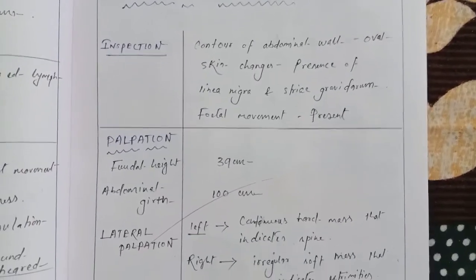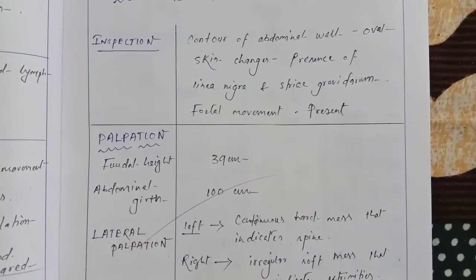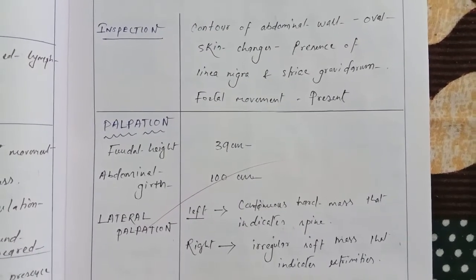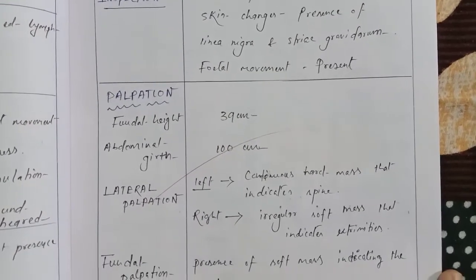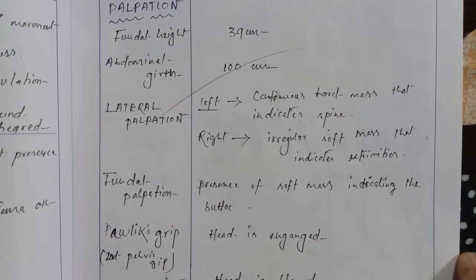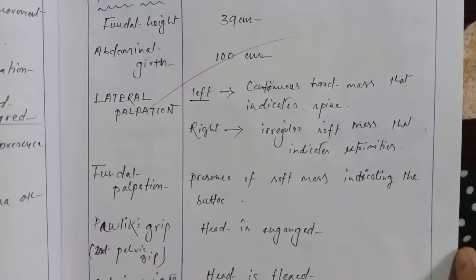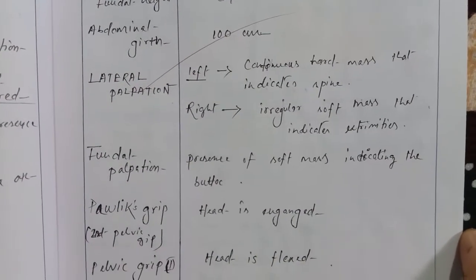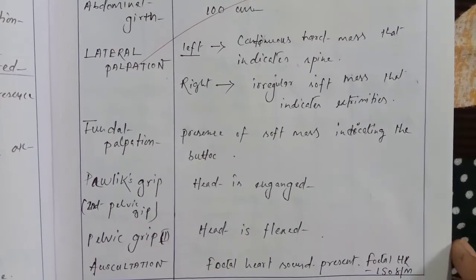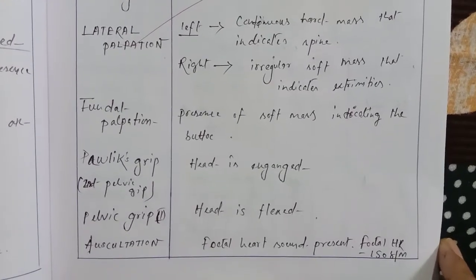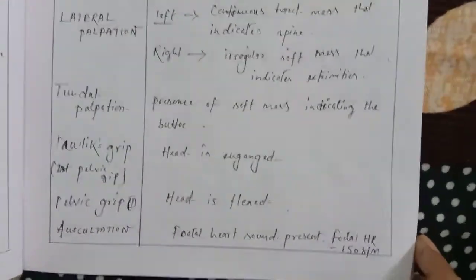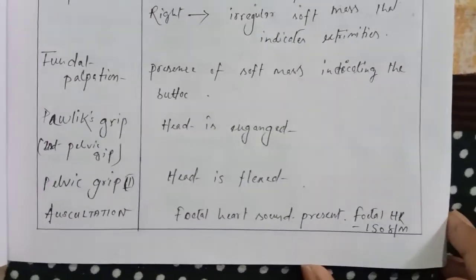Abdominal examination: contour of abdominal wall oval. Skin changes: presence of linea nigra and striae gravidarum. Fetal movement present. Fundal height 39 cm, abdominal girth 100 cm. Lateral palpation: left — continuous hard muscle indicating spine; right — irregular soft mass indicating extremities. Fundal palpation: soft mass indicating buttock. Pelvic grip: head engaged and flexed. Fetal heart rate 150 beats per minute.